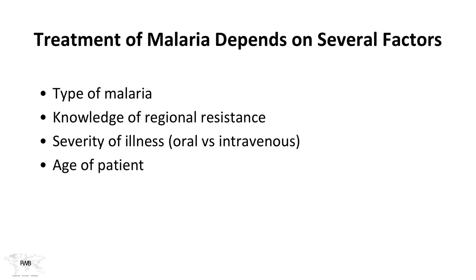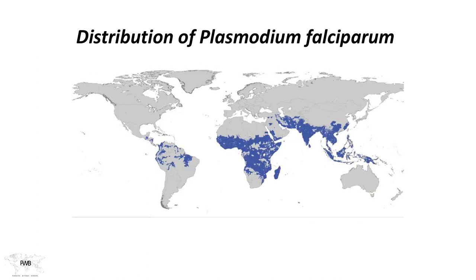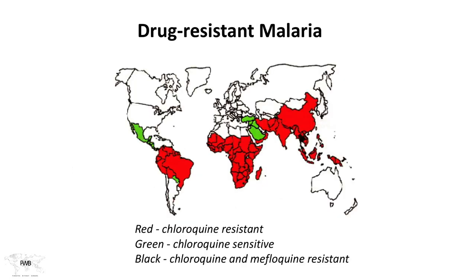Treatment of malaria depends on several factors: type of malaria, knowledge of regional resistance patterns, severity of illness (determining oral vs. intravenous therapy), and patient age. The default is to treat for Plasmodium falciparum initially and then adjust as more information becomes available. Drug-resistant malaria is a significant concern, with the biggest impact being our loss of quinine as a treatment due to growing resistance worldwide.